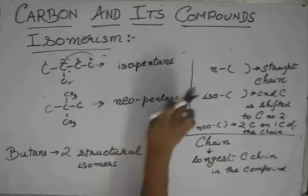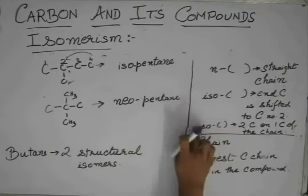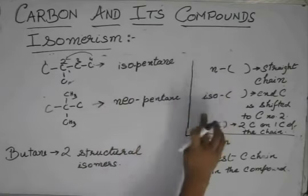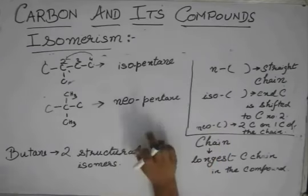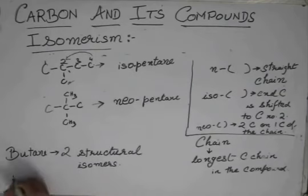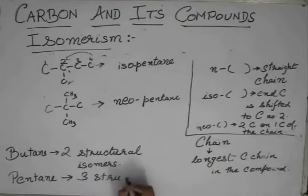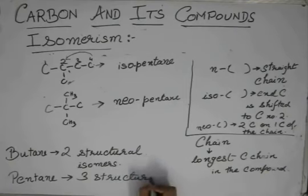We got N, iso, as well as Neo for pentane, but we got only N and iso for butane. Butane could not have formed a Neo butane or sort of a thing. For pentane, we get three structural isomers.